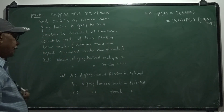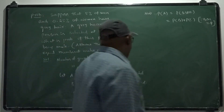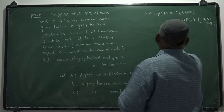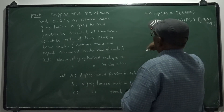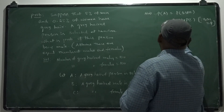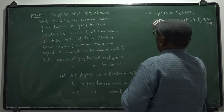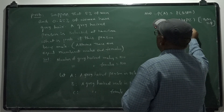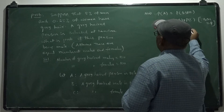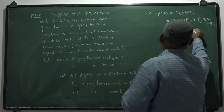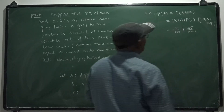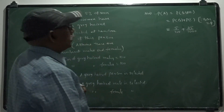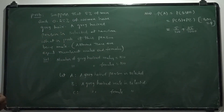The probability of B — that a gray-haired male is selected — is 5 by 100, i.e., 5%. And the probability of a gray-haired female is 0.25%, which is 25 by 10000. This gives us the probability of selecting a gray-haired person.